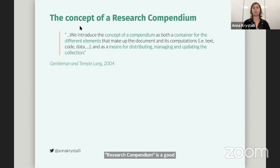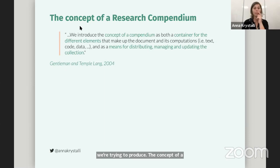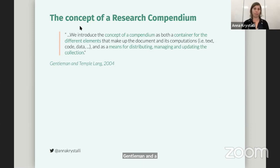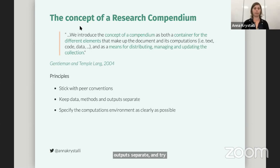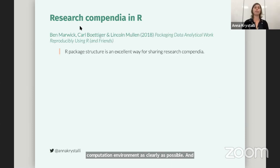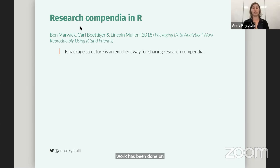When you're trying to define a concept, I think the best place to start is with a good name. I think 'research compendium' is a really good name for what it is we're trying to produce. The concept of a research compendium was described by Gentleman and Temple Lang in 2004 in their paper, where they described the compendium as both a container for all the different elements that make up the document and its computation — all the text, code, and data — but also as a means for distributing, managing, and updating the collection. The principles governing a research compendium are: stick with peer conventions, keep data, methods, and outputs separate, and try to specify the computational environment as clearly as possible.